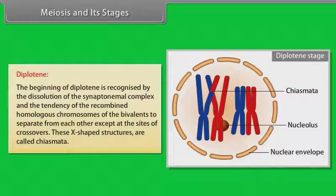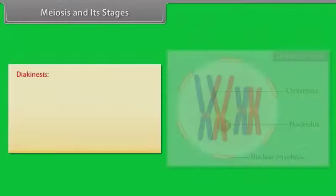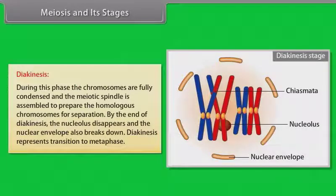Pachytene stage is followed by diplotene stage. The beginning of diplotene is recognized by the dissolution of synaptonemal complex and the tendency of the recombined homologous chromosomes of the bivalents to separate from each other except at the sites of crossovers. These X-shaped structures are called chiasmata. The final stage of meiotic prophase 1 is diakinesis. This is marked by terminalization of chiasmata. During this phase, the chromosomes are fully condensed and the meiotic spindle is assembled to prepare the homologous chromosomes for separation. By the end of diakinesis, the nucleolus disappears and the nuclear envelope also breaks down. Diakinesis represents transition to metaphase.